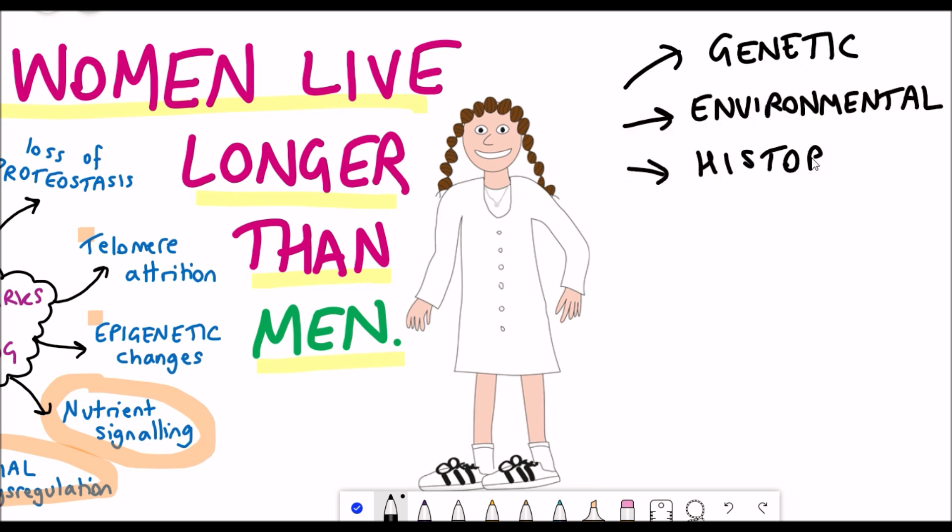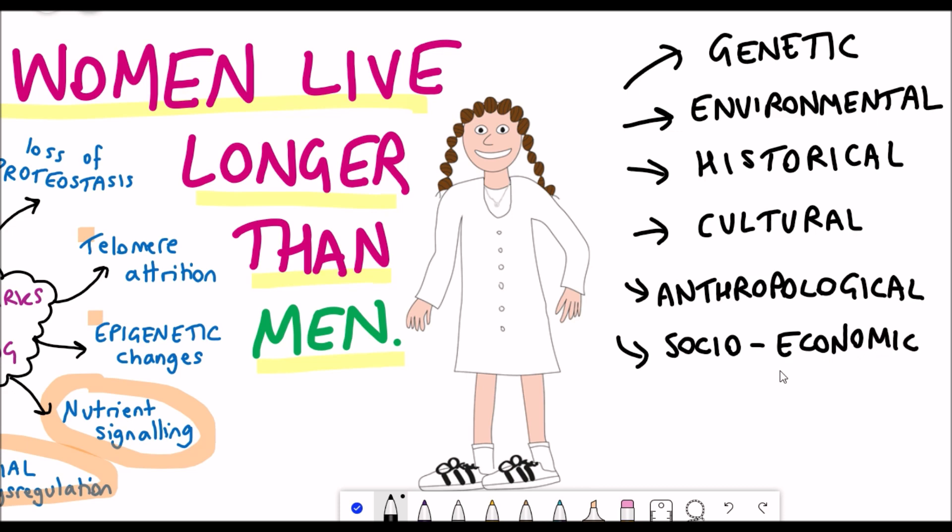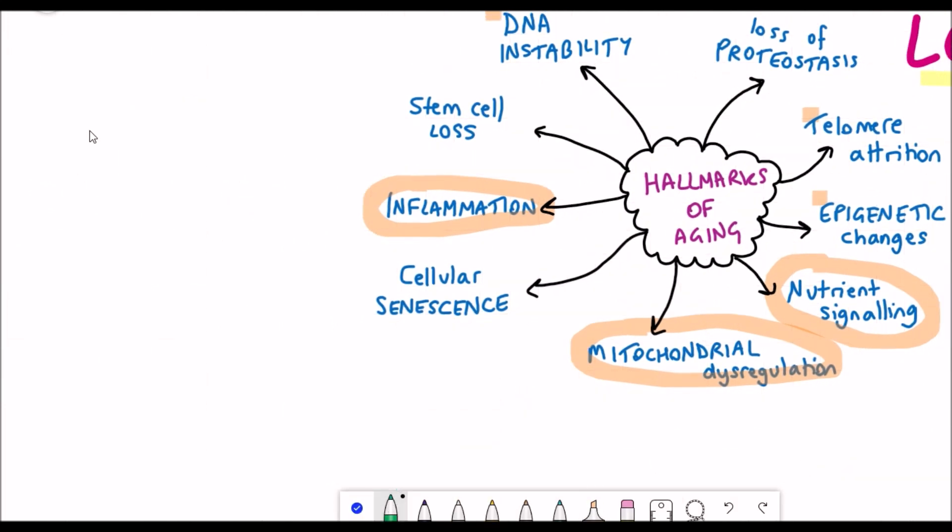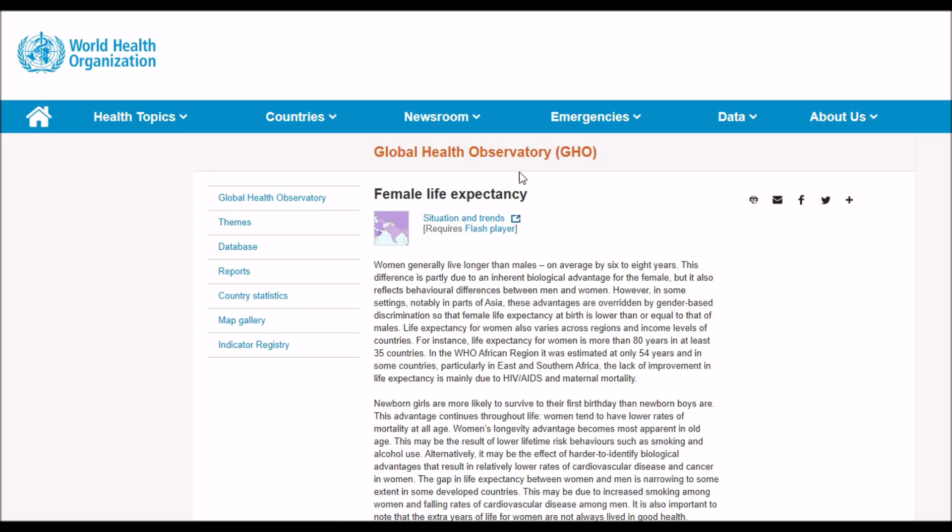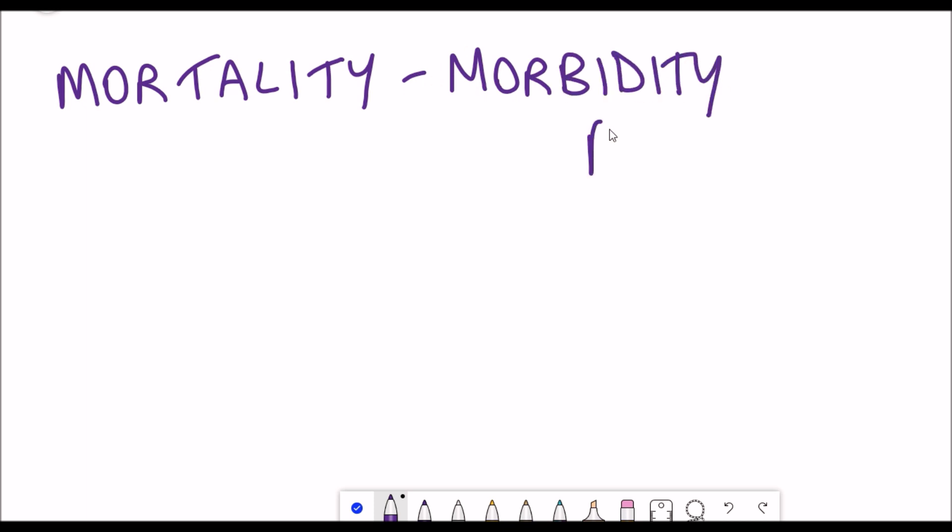Explaining why women live longer than men is no simple task and isn't something that we fully understand yet. There are many environmental, historical, cultural, anthropological, socio-economic, and genetic factors that might be at play here. Obviously from my background I'll talk mainly about the science. But firstly, just to clear the waters, I want to reiterate that this is a general trend that women generally live longer than men, and that's on average by six to eight years. This is all data collected by the World Health Organization. However, it's not all sunshine and sprinkles for females because there's also a mortality morbidity paradox which we'll come back to a little bit later.